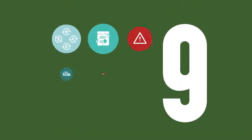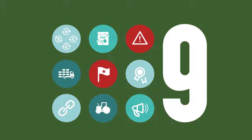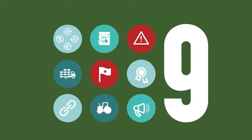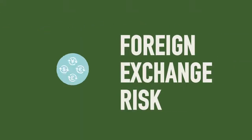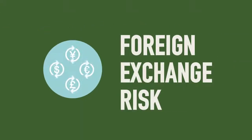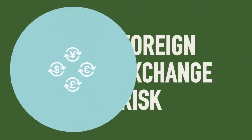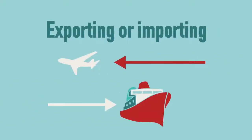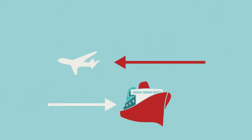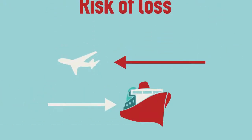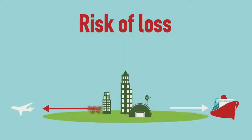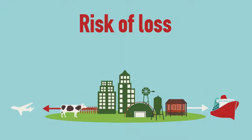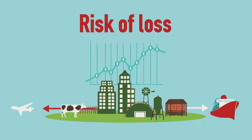The nine key risks for agribusinesses considered in the AIBA template are: Foreign Exchange Risk — for businesses exporting or importing, an assessment is made as to their risk of losses from exchange rate movements and their ability to manage this risk.